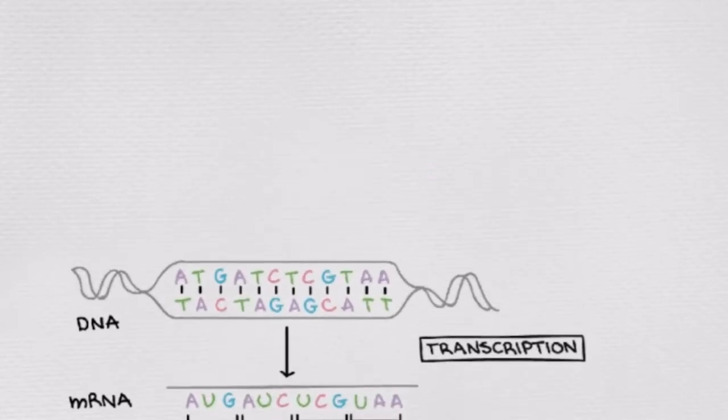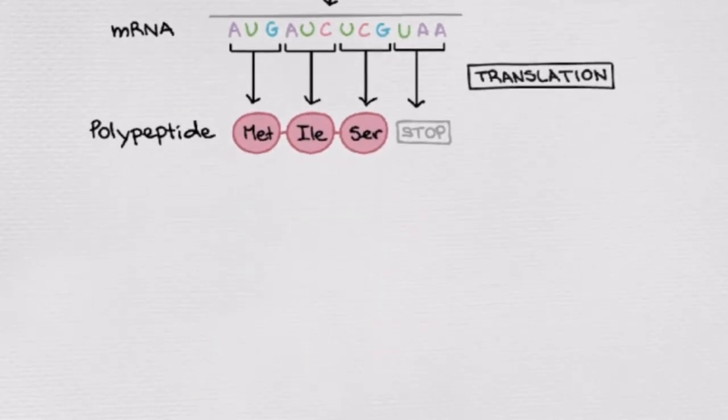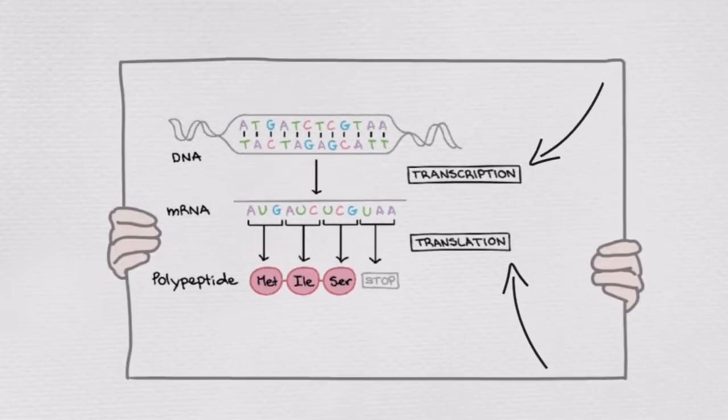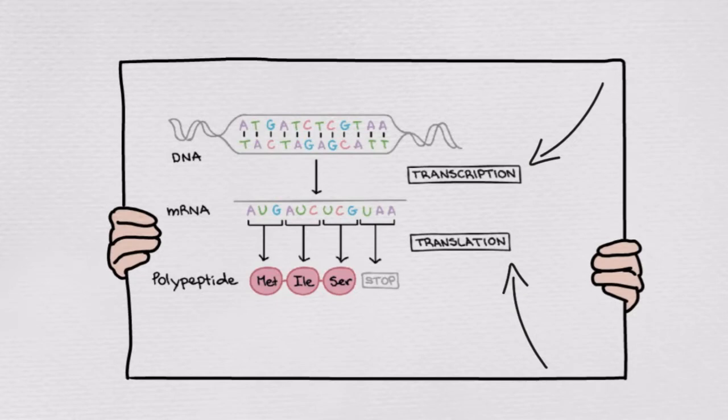Transcription is the process of transcribing the double-stranded DNA code to a single-stranded mRNA transcript. Translation, on the other hand, is the process of translating the mRNA code into amino acids that are joined together to form a protein.